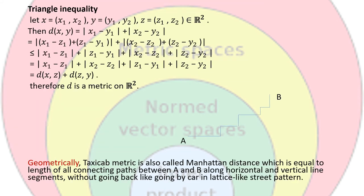For the triangle inequality, we take x equals (x1, x2), y equals (y1, y2), and z equals (z1, z2) in R2. Then d(x,y) equals modulus of (x1 minus y1) plus modulus of (x2 minus y2). Adding and subtracting z1 and z2 gives modulus of (x1 minus z1 plus z1 minus y1) plus modulus of (x2 minus z2 plus z2 minus y2). Applying the triangle inequality for modulus, this becomes modulus of (x1 minus z1) plus modulus of (z1 minus y1) plus modulus of (x2 minus z2) plus modulus of (z2 minus y2), which rearranges to modulus of (x1 minus z1) plus modulus of (x2 minus z2) plus modulus of (z1 minus y1) plus modulus of (z2 minus y2), equaling d(x,z) plus d(z,y).